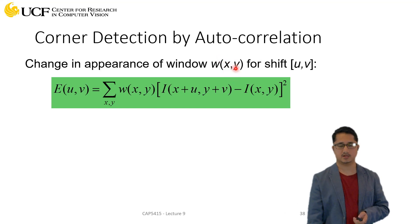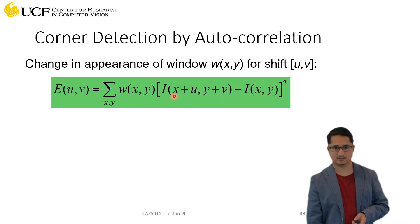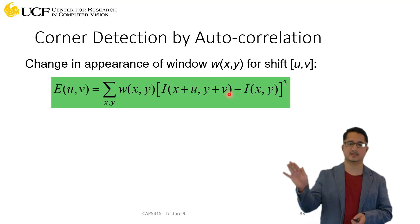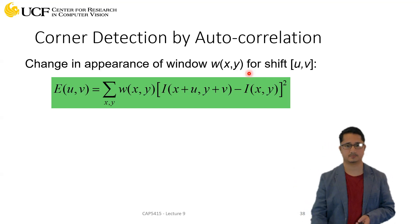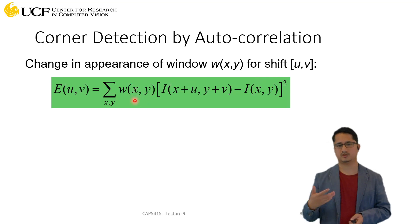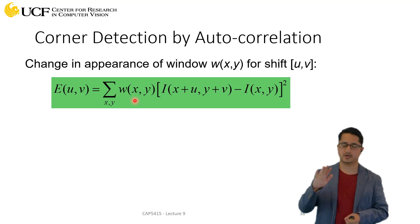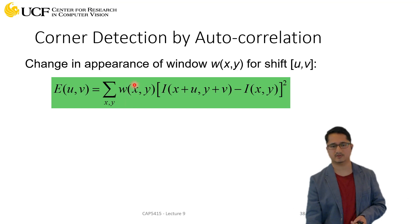You extract a window from location (x, y) and shift it by values u and v, which defines the neighborhood — how far you want to go. Then you find the difference: I(x, y) is the exact location you're interested in, and I(x+u, y+v) represents the neighborhood. You're checking whether the pixel intensity is actually changing in the neighborhood. You square that value, and there's a weighting function — which can be a step function or a Gaussian — to pay more attention to the center location and less to locations far from the center.